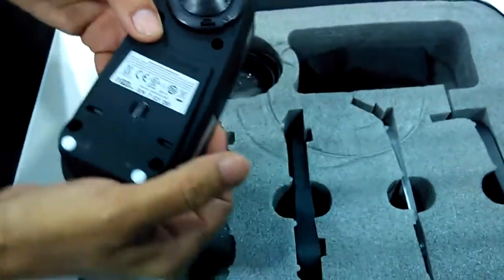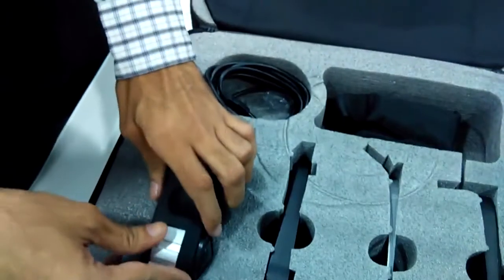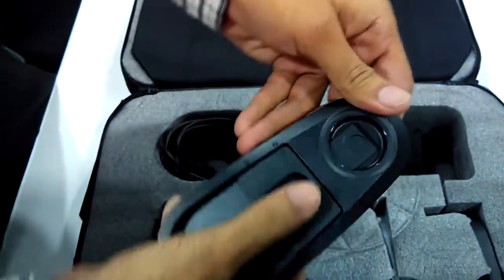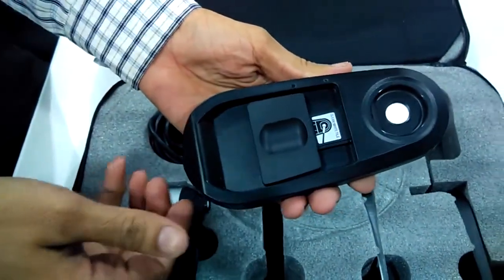Now we'll move to the other accessory which comes along with the device—that is the white tile used for calibration.